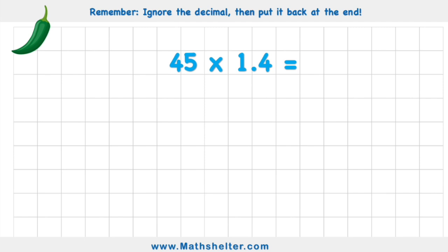We have this question: 45 times 1.4. The tip for today — what to remember — is we're going to ignore the decimal and then put it back at the end. At the moment we have the number 1.4 with the decimal. 1.4 is 10 times less than just saying 14.